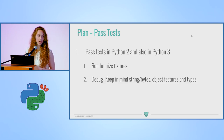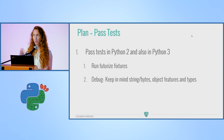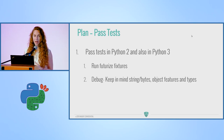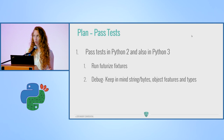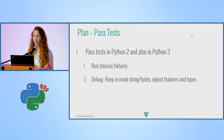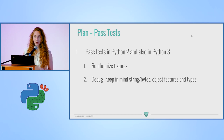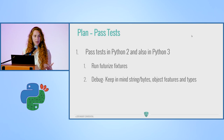Once you're done with the first step — getting all the tests to run — some of them will also pass. Before moving on to getting all tests to pass, push the changes you've already made into your continuous integration repository. You don't want someone else working on another feature to break the things you've already fixed.